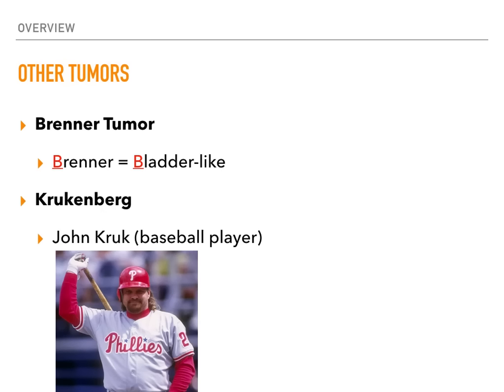For the Brenner tumor, all you need to remember is that it's bladder-like. If there's any association in the histology or pathology that sounds like a bladder, it's a Brenner tumor. Don't overthink it — just memorize it. The last one is the Krukenberg tumor. John Kruk, the baseball player with the big belly, helps me remember it: a Krukenberg tumor is a tumor that metastasizes from the gut to the ovary. Think of someone with a big gut — that's a Krukenberg tumor.